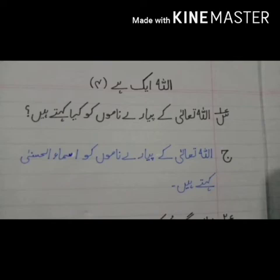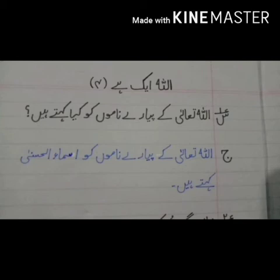اور ایک لائن چھوڑ کر آپ نے سوال نمبر ون رائٹ کرنا ہے، پھر ٹو لائنز کا اسپیس دے کر 'ج' رائٹ کرنا ہے — 'ج' کا مطلب ہے جواب۔ اب آپ نے سوال نمبر ون رائٹ کرنا ہے: اللہ تعالیٰ کے پیارے ناموں کو کیا کہتے ہیں؟ — لاسٹ میں آئے گا کوئیشن مارک۔ سوال ایسے رائٹ کرنا ہے، ہر لفظ کے بعد ون فنگر کا گیپ دینا ہے۔ اب ٹو لائنز کا اسپیس دے کر جواب رائٹ کرنا ہے: اللہ تعالیٰ کے پیارے ناموں کو اسماء الحسنہ کہتے ہیں — اینڈ میں ڈیش لگانی ہے۔